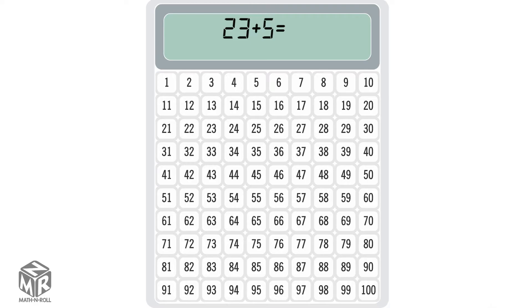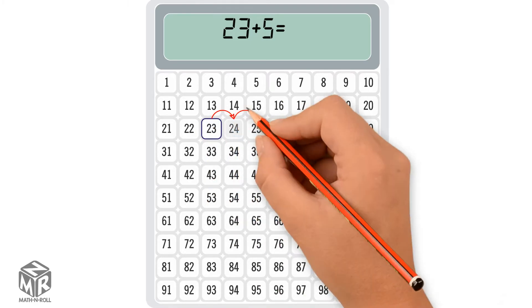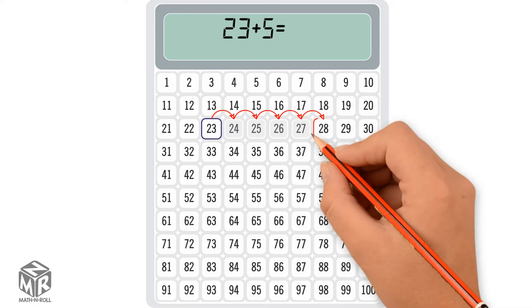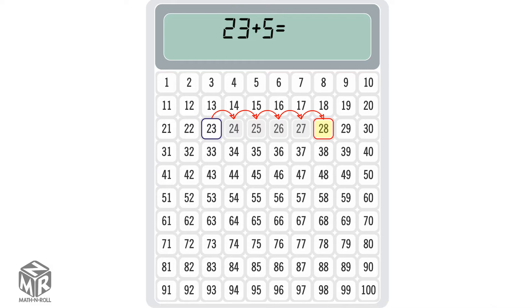23 plus 5. Start at 23. Count 5 squares in the row. We get 28, so 23 plus 5 equals 28. Let's try another example.